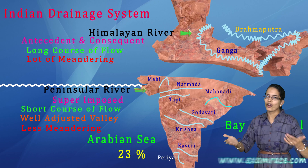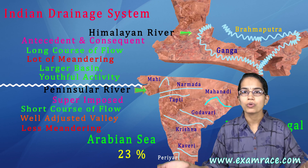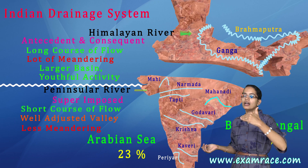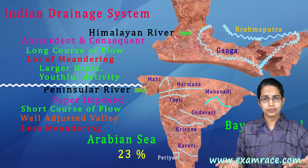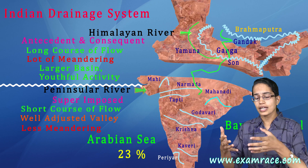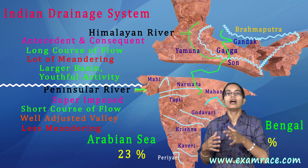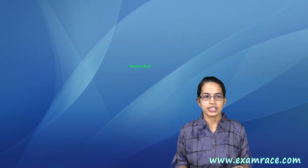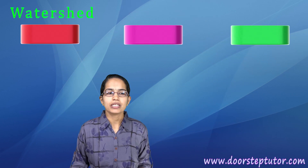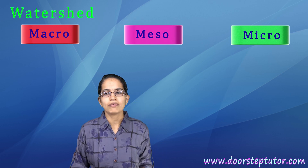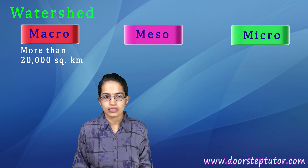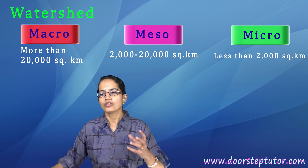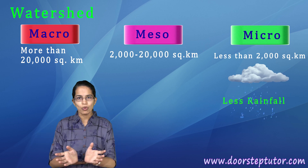In the north, since rivers are long, the basin area is also large — showing more youthful activity and more active erosion. Taking the Ganga as an example, it has tributaries like Yamuna, Son, and Gandak joining the main river. This brings us to watershed classification: macro watersheds cover 20,000 square kilometers or more, meso from 2,000 to 20,000 square kilometers, and micro refers to areas less than 2,000 square kilometers with very limited rainfall and small water accumulation.